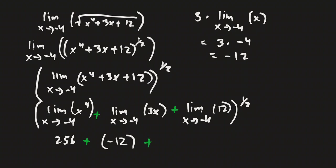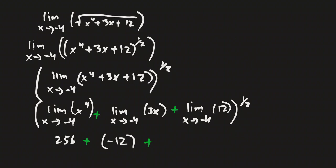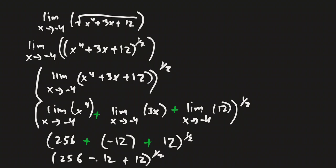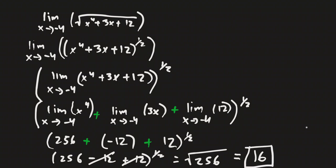So we have 256 plus negative 12 plus positive 12 — and we can see that the negative 12 and positive 12 cancel to 0. This becomes 256 to the power of 1/2, which is the square root of 256, and that is equal to positive 16.